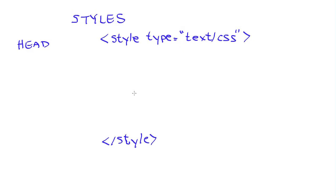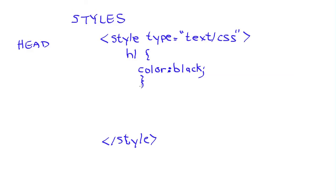Whatever styles we have go in between the opening and closing style tags. For example, I might want all of my H1 headings to be of a particular color. So I write H1, then an opening curly brace, then 'color colon black semicolon', then the closing curly brace. The last item on the line ends with a semicolon, and whenever I have an opening curly brace I need a closing curly brace. I could define more properties for H1 in between those two curly braces.